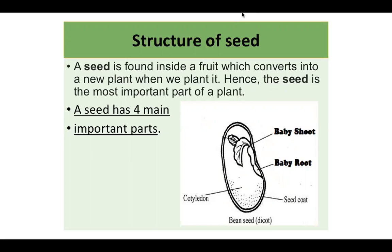Before starting that we must understand the structure of a seed. A seed is found inside a fruit which converts into a new plant when we plant it. Hence the seed is the most important part of a plant. Almost all seeds are found inside the fruit, except strawberry, where seeds are outside the fruit.